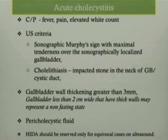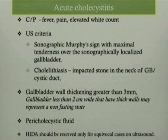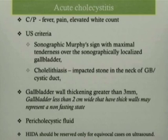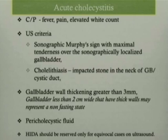The ultrasound criteria include specific signs and other useful signs, and a combination of all these signs helps us make the diagnosis. Sonographic Murphy's sign is the most specific, demonstrated by eliciting maximal tenderness over the sonographically localized gallbladder. Other findings include cholelithiasis, impacted stone in the neck of the gallbladder or cystic duct, and gallbladder wall thickening greater than three millimeters — though the gallbladder must be optimally distended. Nuclear scan including the HIDA scan should be reserved only for equivocal cases on ultrasound.